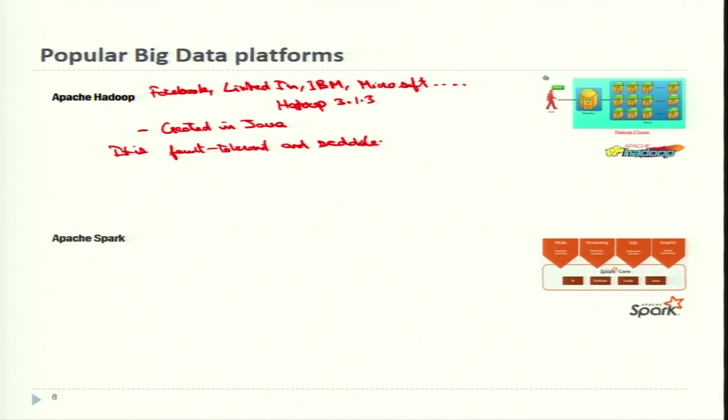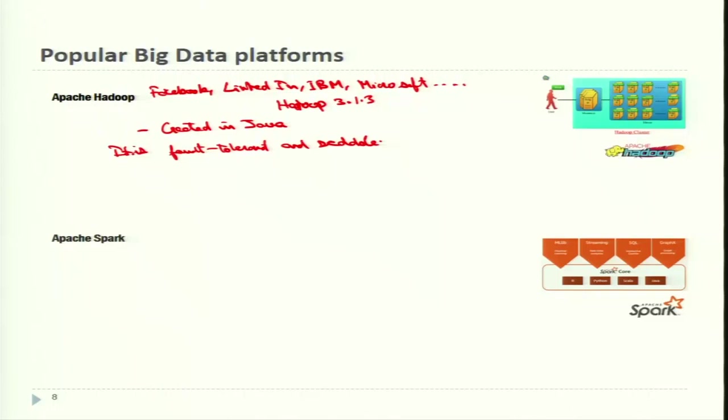Fault tolerant means the software is flexible and can handle mistakes or failures gracefully. Scalable means the analytic sandbox can be doubled in size, scaled to multiple times its original size, or reduced later. This flexibility is why Hadoop is so widely used.